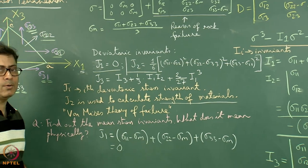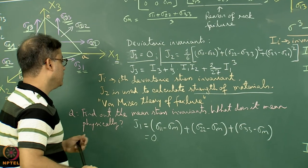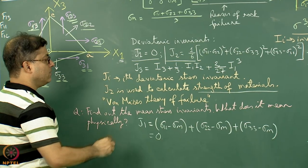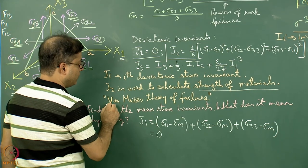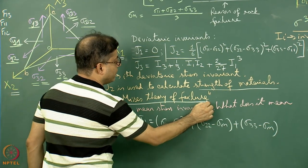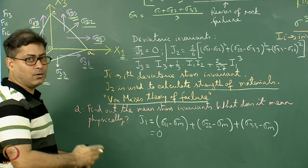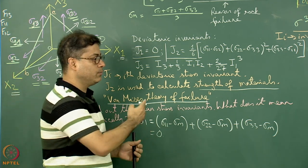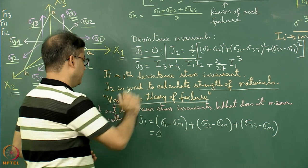j2 is very important because it is used to calculate the strength of materials. If an opportunity comes, we will see it in more detail and the strength-of-material calculation will be linked with the von Mises theory of failure. We are not getting into that right now, but we may come back to it later.